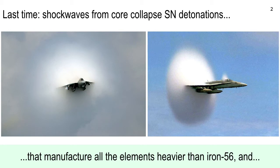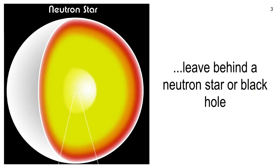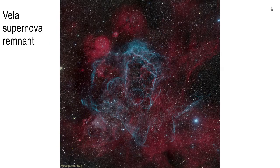So shock waves manufacture all the elements above iron-56, and sometimes core collapse supernovae leave behind either a neutron star or a black hole. We talked about neutron stars last time — I want to give you a few more concepts.